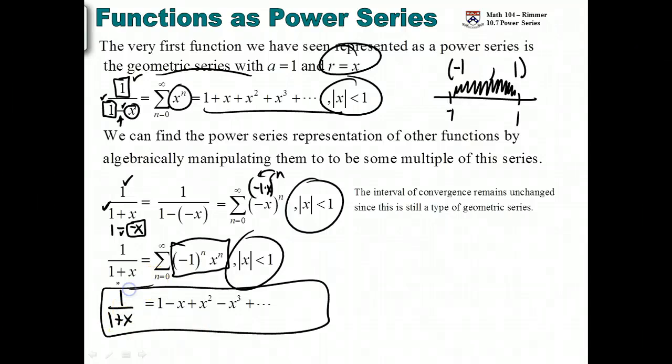So 1 over 1 plus x is now generated by this series here. And what I'm doing is I'm building a library of functions that I know the series for. That's what basically the next section is all about. We get some here. But then we recognize that what we're doing here is all based off of the first one.